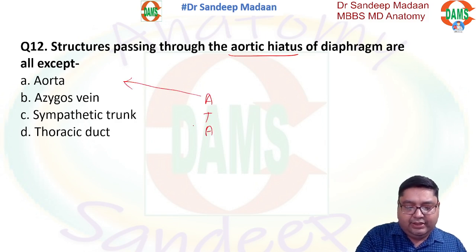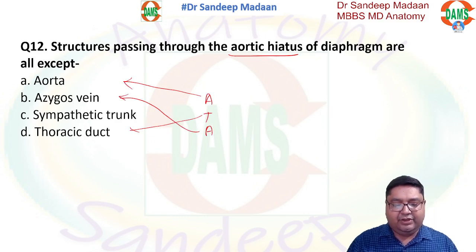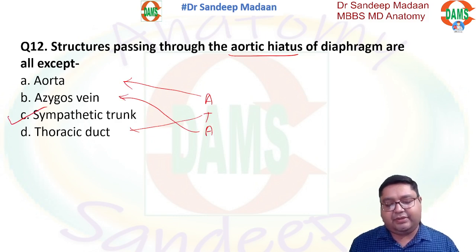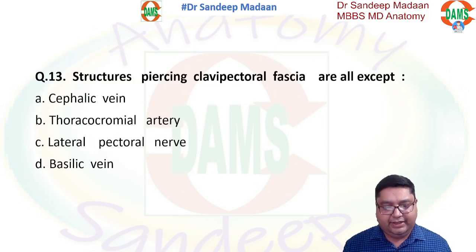Next: the aortic hiatus. The aortic hiatus allows the aorta, thoracic duct, and azygous vein to pass through. The sympathetic trunk does not pass through the aortic hiatus, so C is the answer.